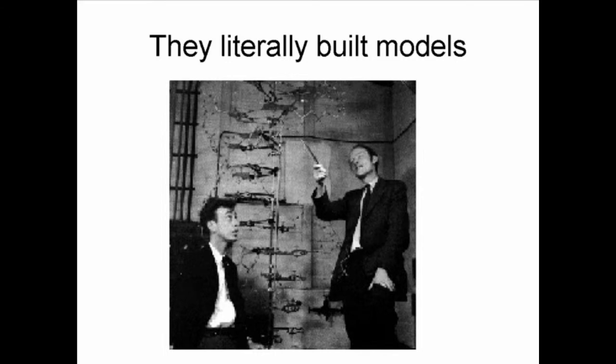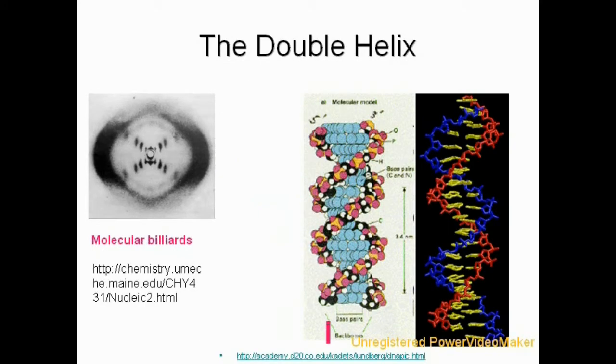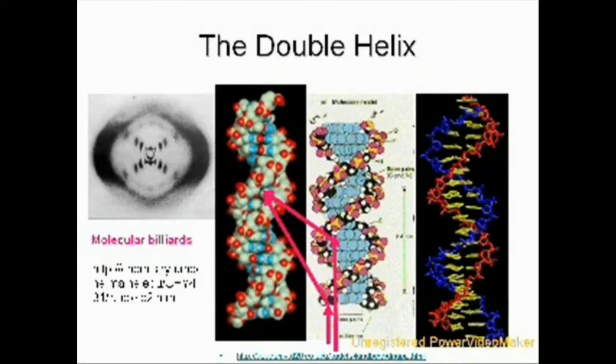But first we need to understand what an X-ray crystallograph is. The X-ray crystallograph is molecular billiards where X-rays bounce off of two consecutive rungs of a helix or any regular pattern, they produce a spot. And the distance of the spot tells you about the structure of the helix. So basically, by reading the distances of the spots, it became possible to recognize that DNA was a helix and furthermore to tell something about its parameters.